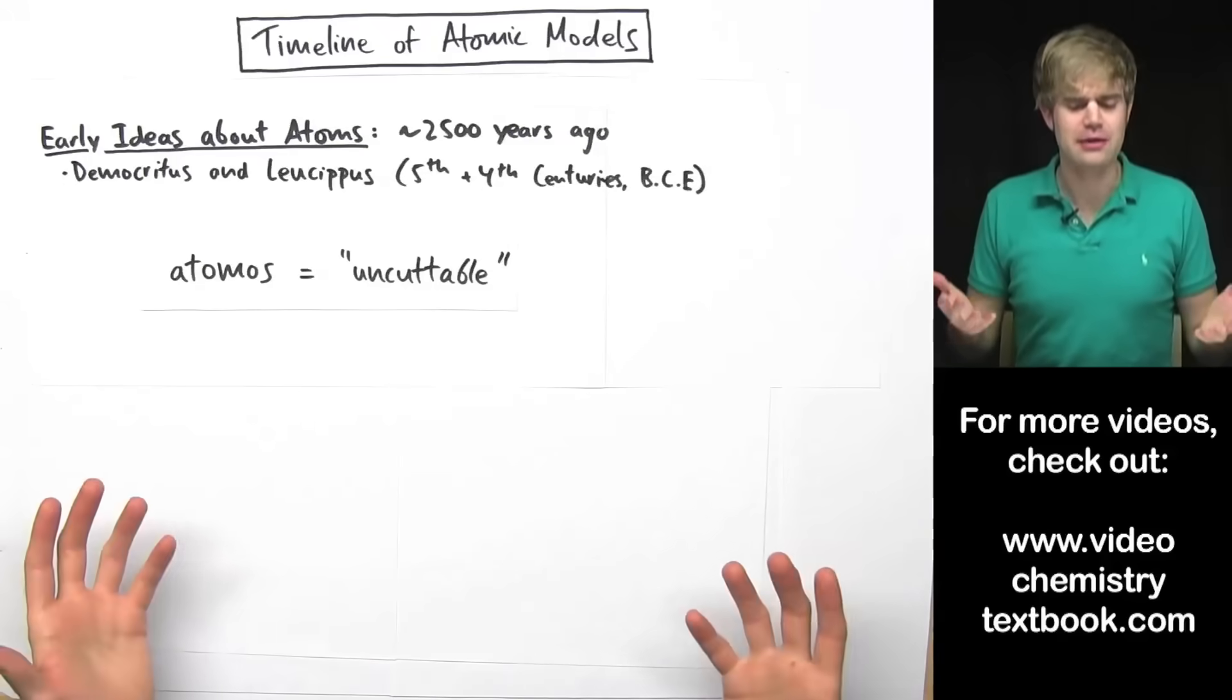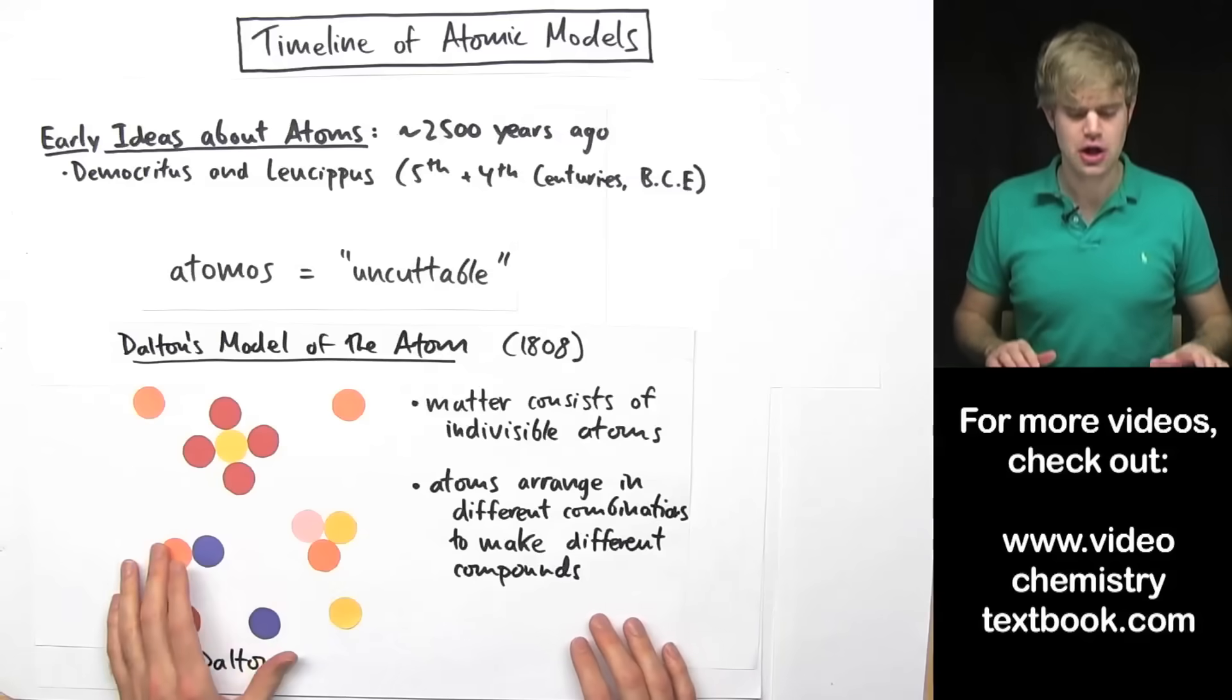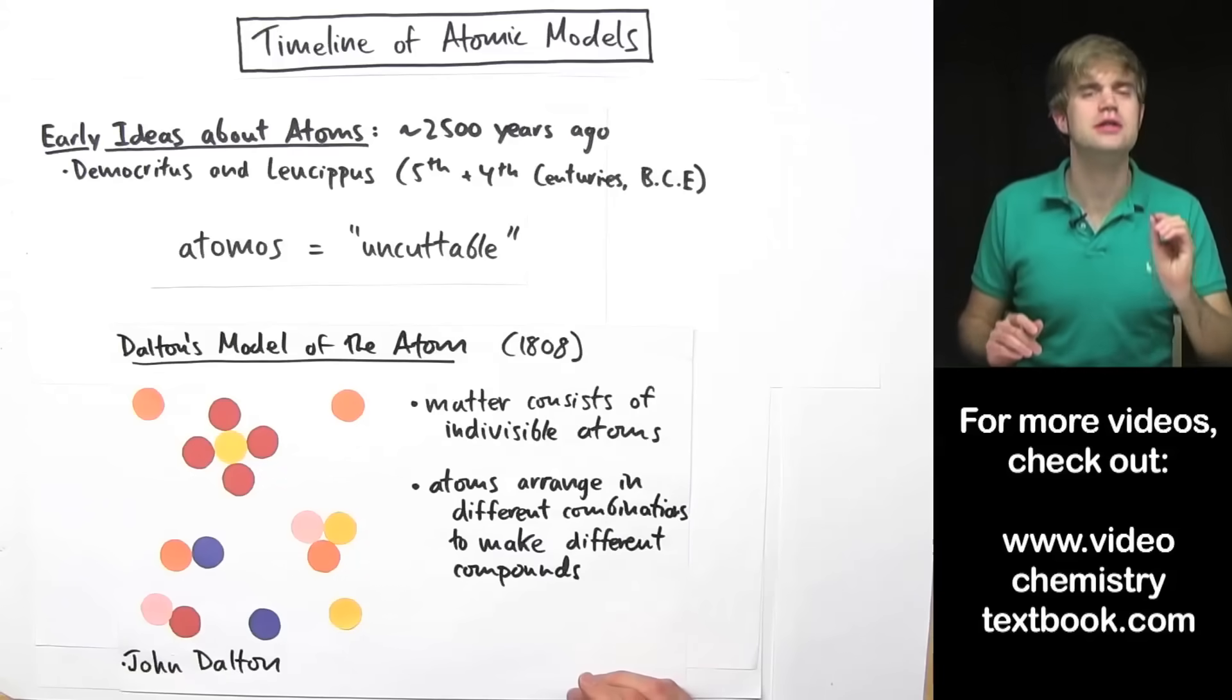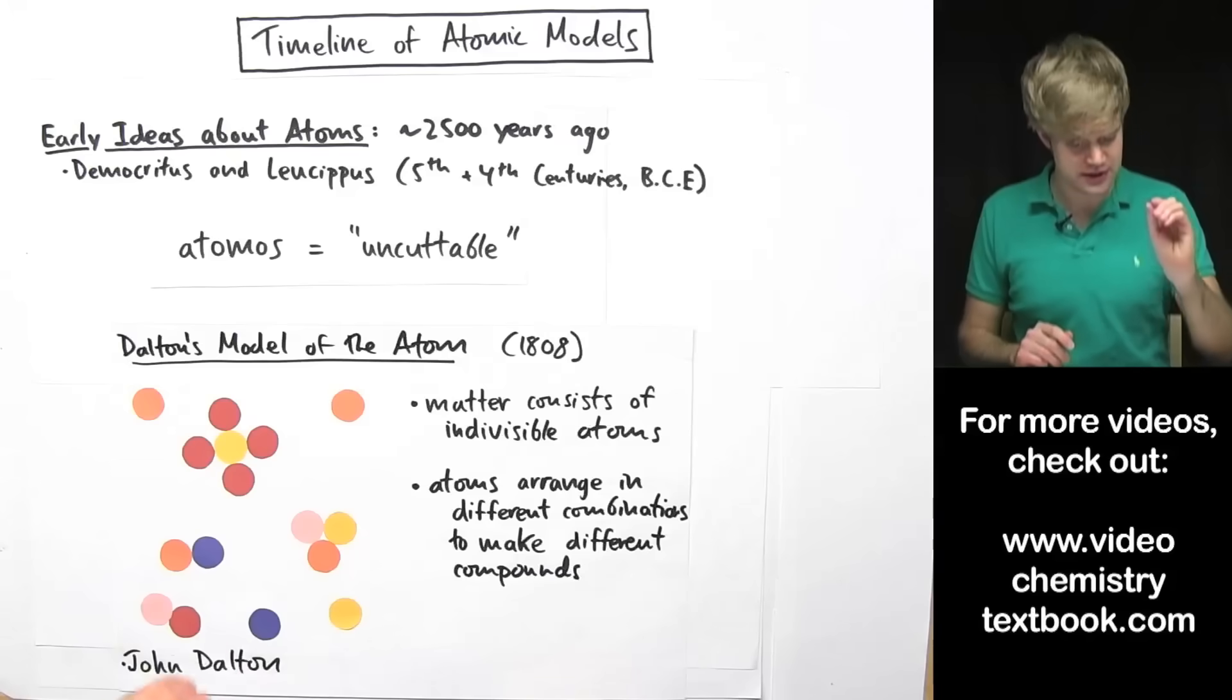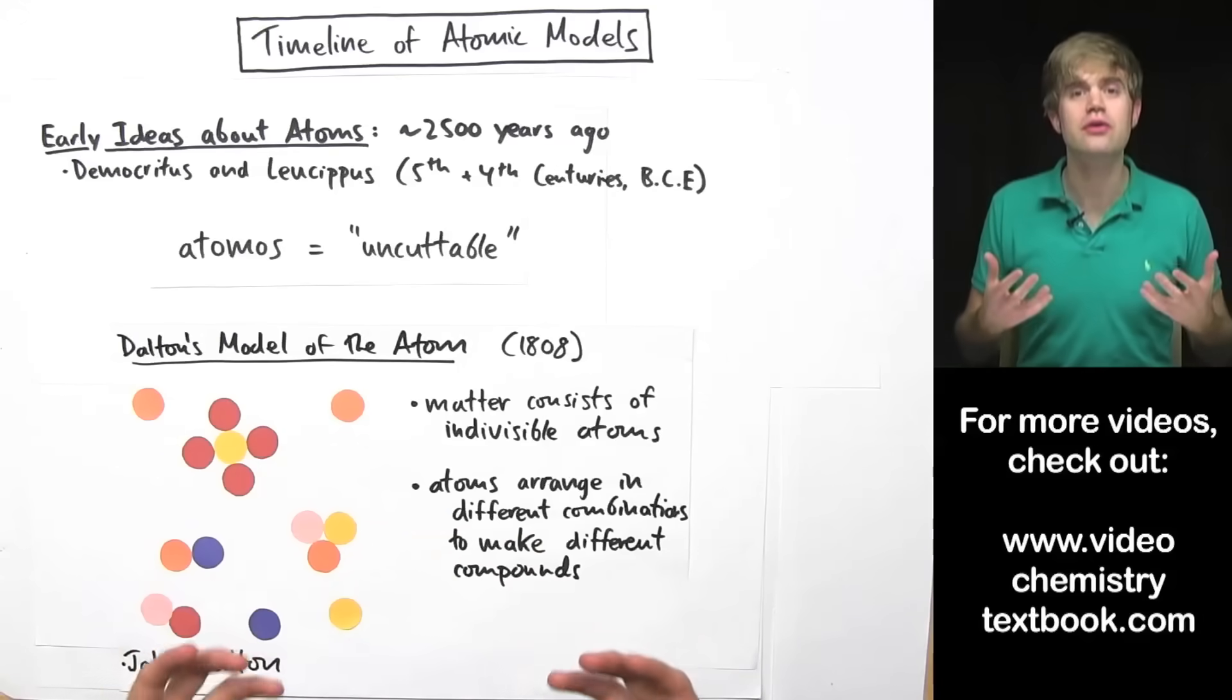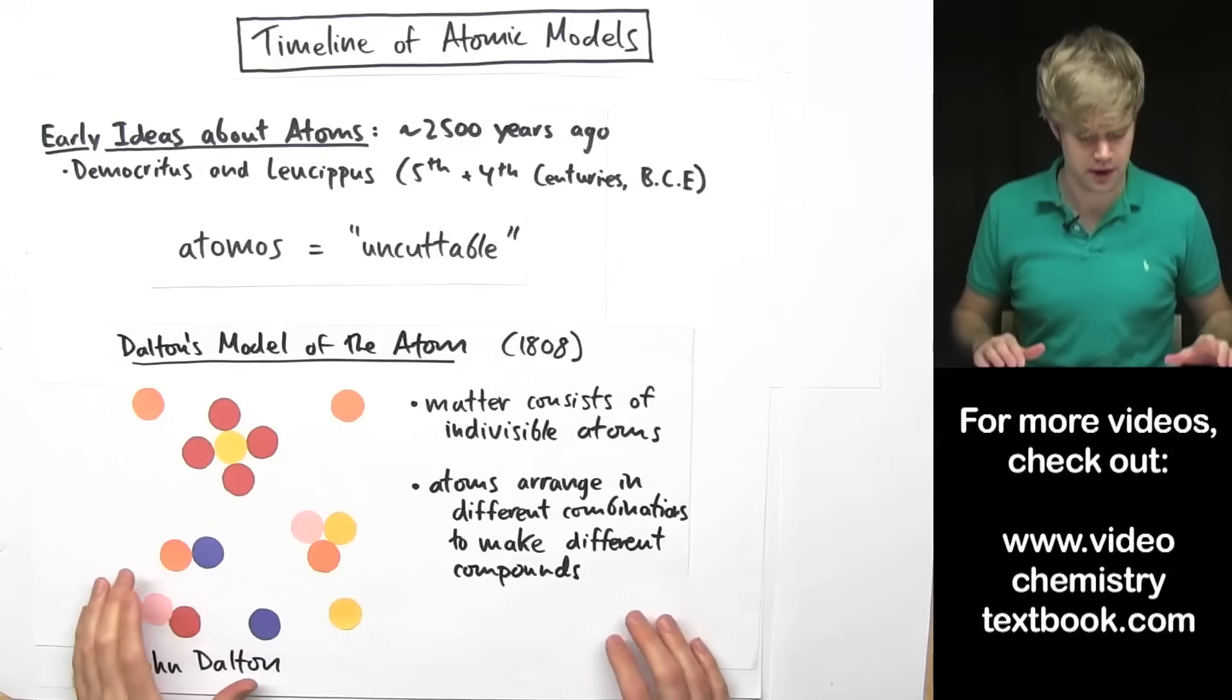Ideas about atoms remained that way for about 2,000 years until in 1808, the British chemist John Dalton came up with the first scientific experiments that showed that matter was made of tiny little particles. This is kind of how John Dalton pictured atoms. He imagined them sort of as tiny little balls that arranged in different combinations to make different things. And he imagined that these atoms were indivisible. You couldn't cut them into smaller pieces.